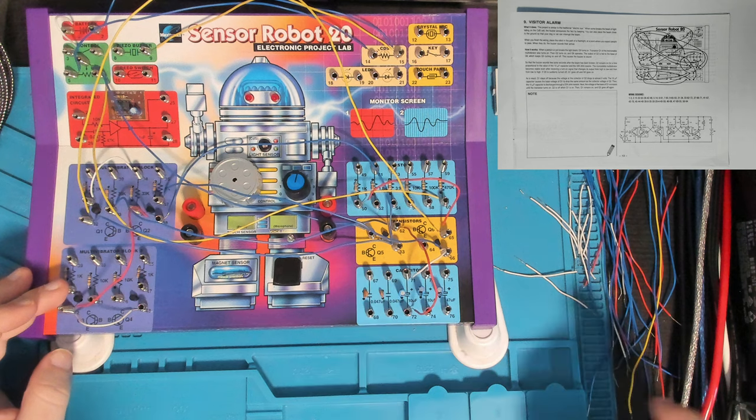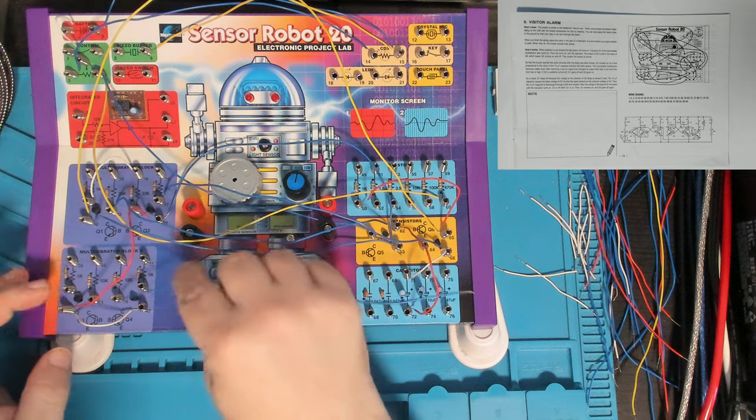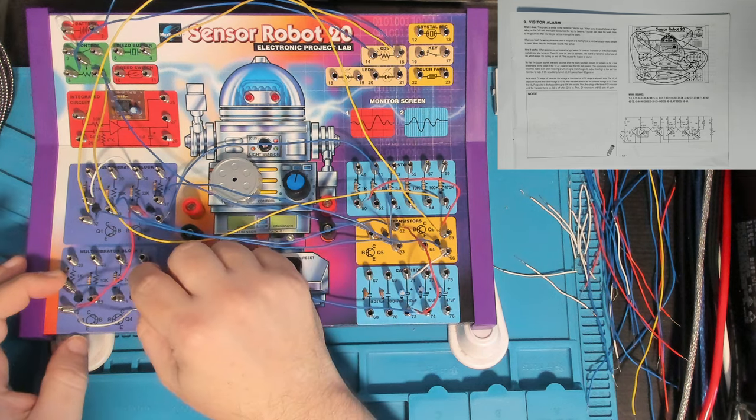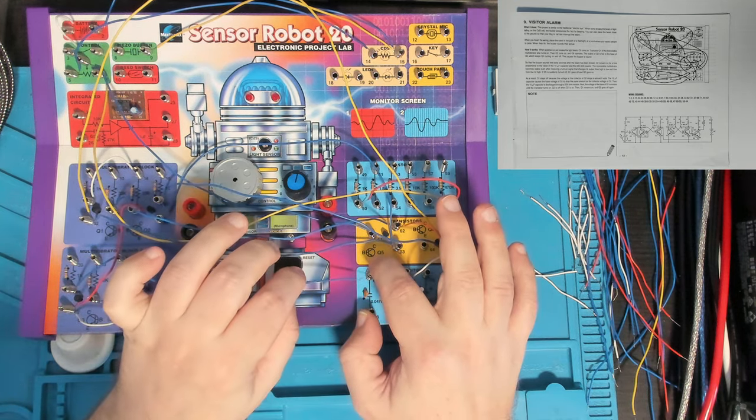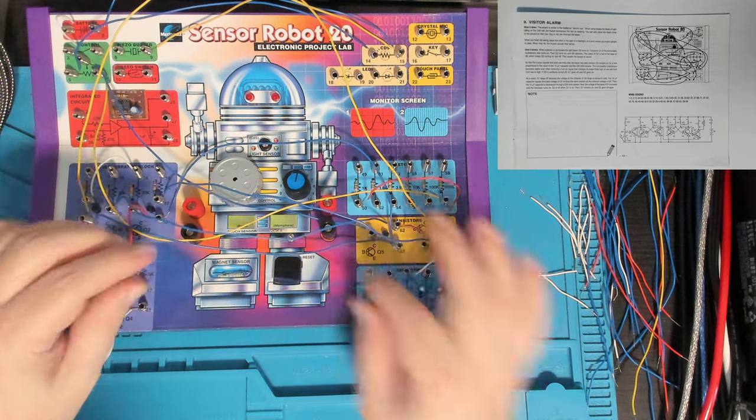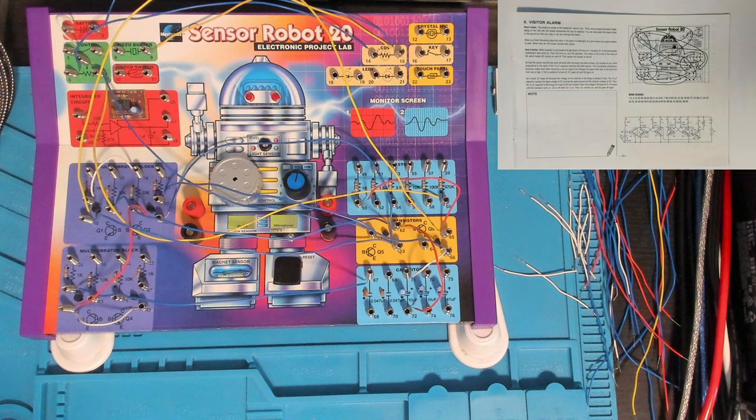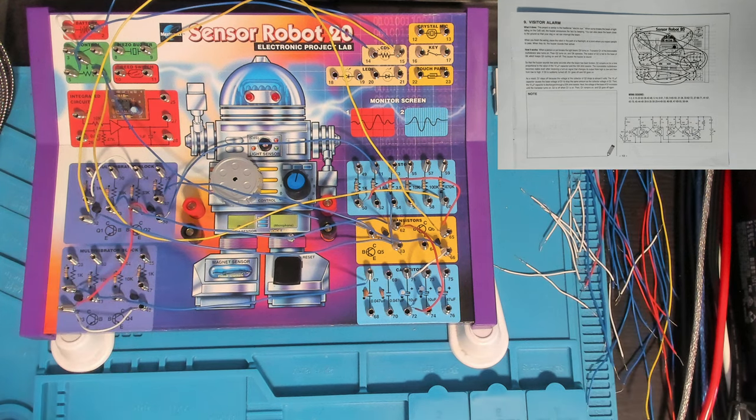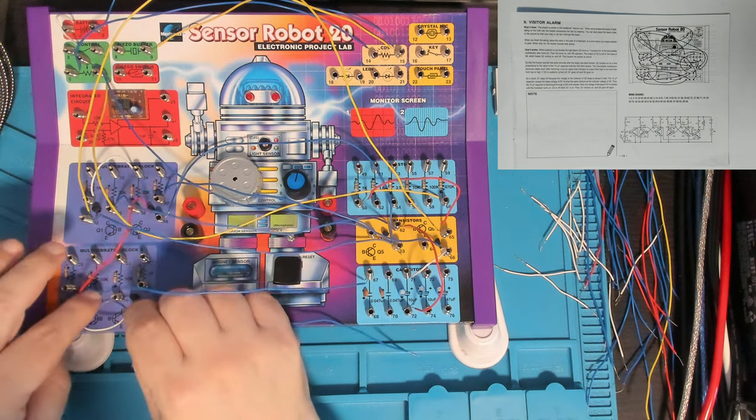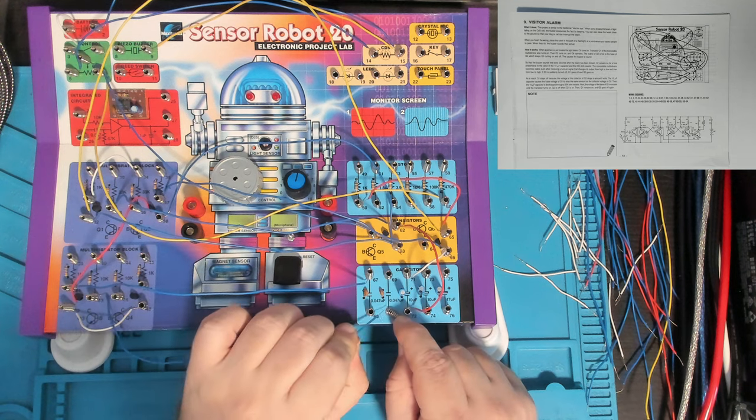And then it's 41 to 67. We're going to use some of our smaller ceramic caps for the buzzer. The low capacitors are part of the astable multivibrator which creates the high-pitched tone for the piezo buzzer. So we've got 43 to 70, the other ceramic capacitor. We're just making the buzzer here at the moment.